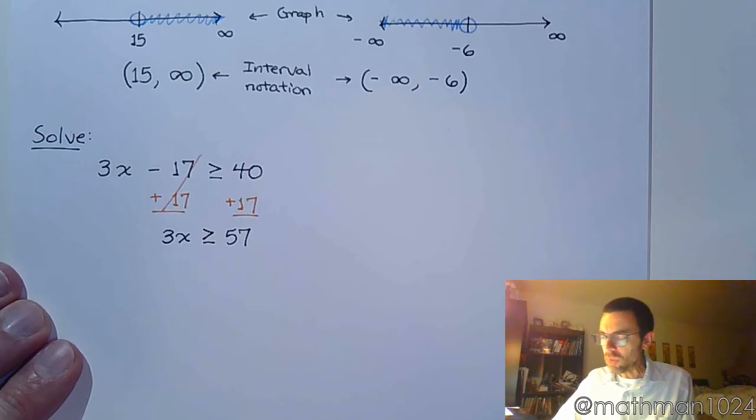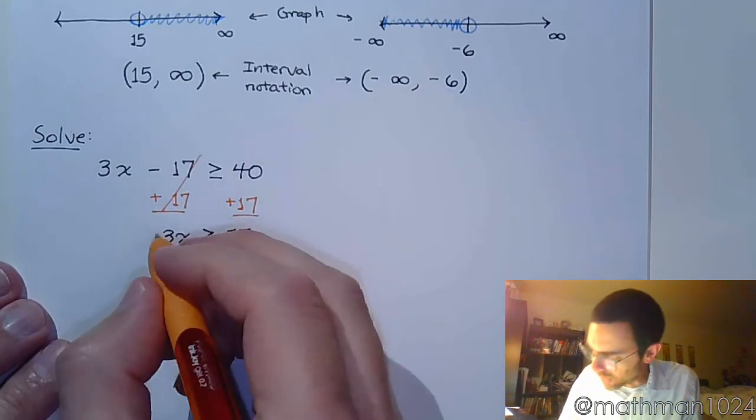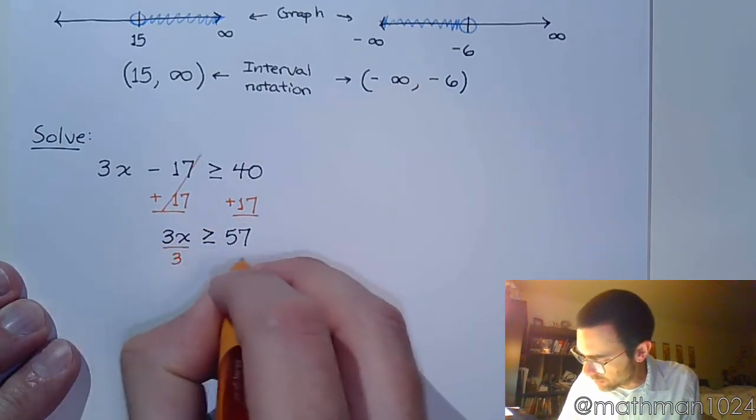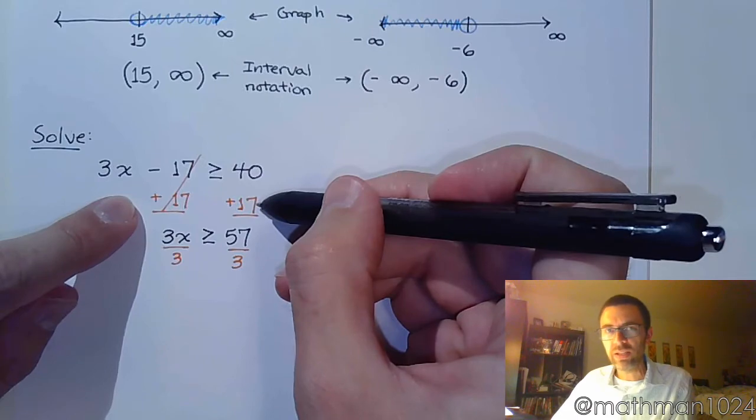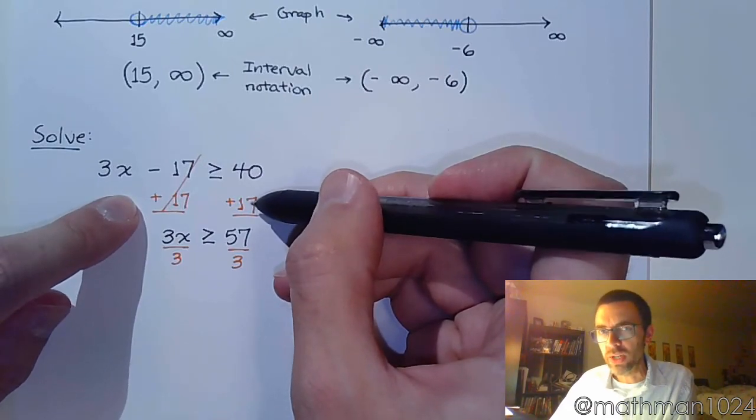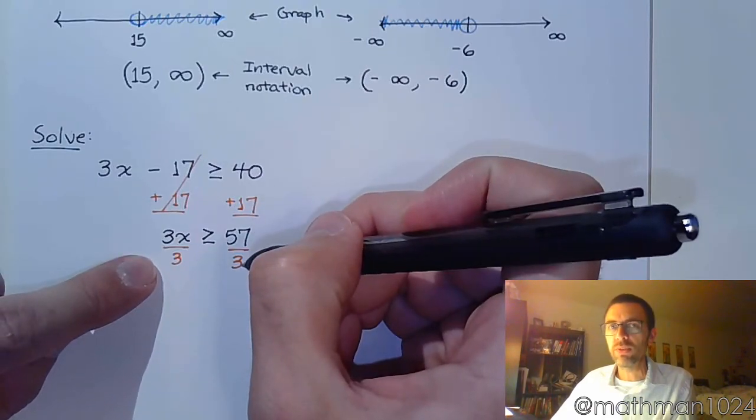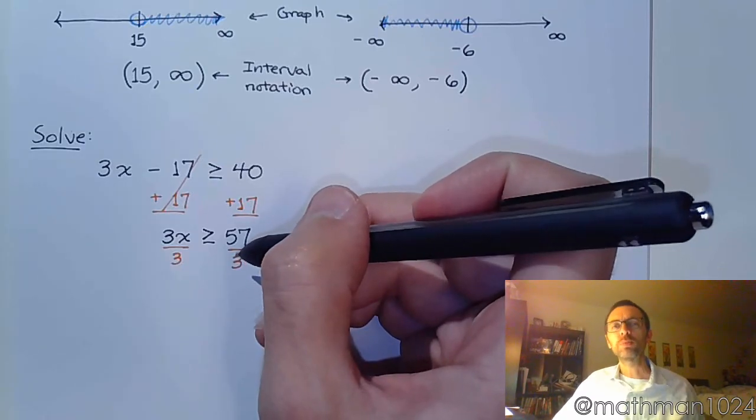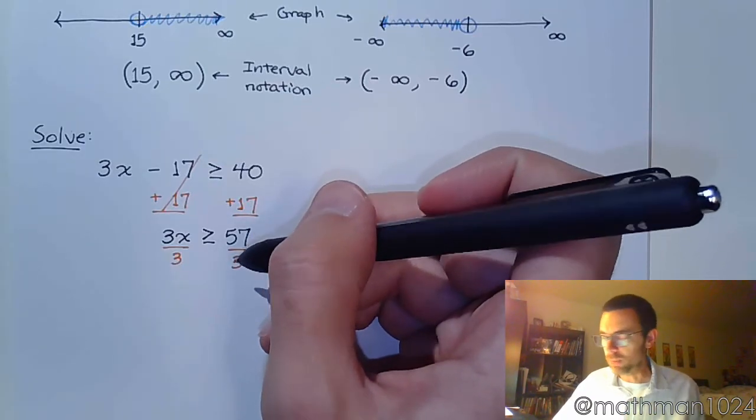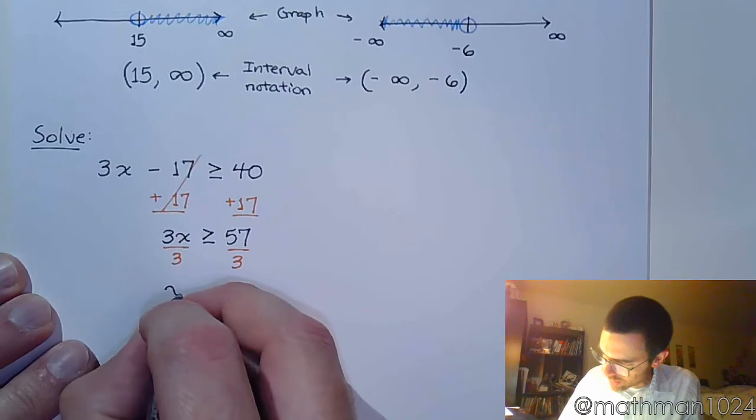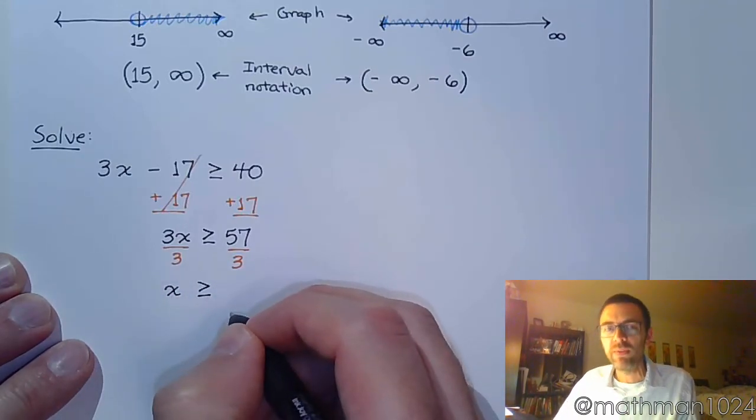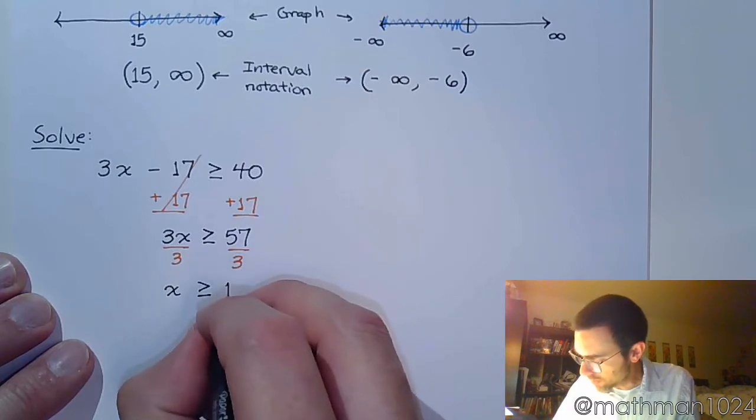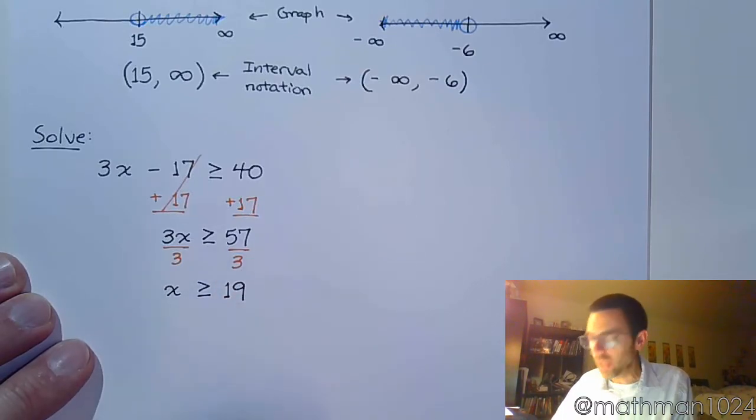And then we want to get x by itself, so we divide both sides by 3. Notice that adding isn't cause for changing the direction of the inequality, nor is division by 3. Remember, it's only when you multiply or divide by a negative number. So this stays as greater than or equal to 57 divided by 3 is 19.